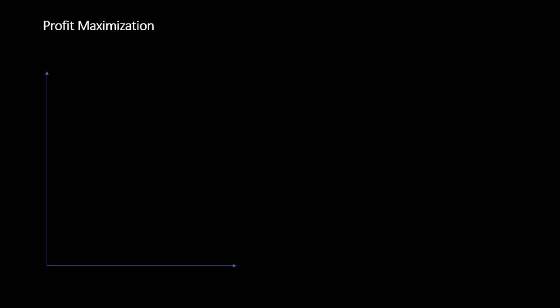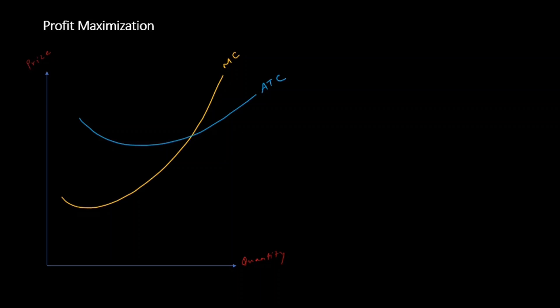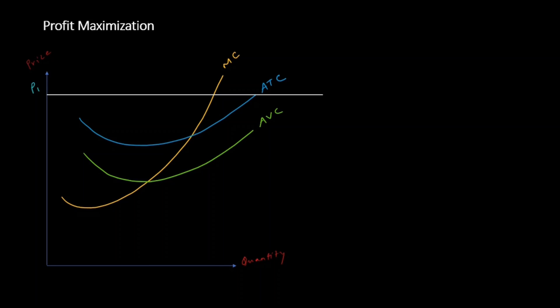Let's start with a scenario where the industry is relatively new and initially there are few players in the market. Let me draw a graph — on the x-axis I have quantity demanded, on the y-axis I have price. This is my marginal cost curve, this is my average total cost curve, and this is my average variable cost curve. Suppose the price of my product is P1.